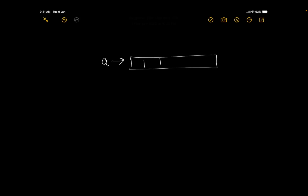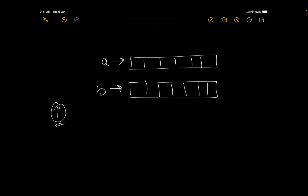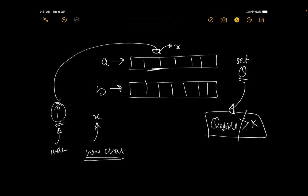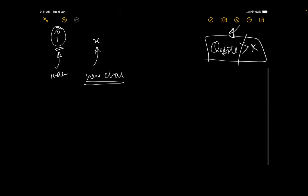So this is string A and this is string B. In an operation we select index i, select a new character x, replace the character at index i with x, and the initial character that was stored at that location goes into the set Q. At the end, the size of the set cannot be greater than k.